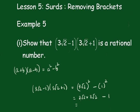Of course this is 3 times 3 is 9 times √2 squared is just 2, minus 1. So the answer is 18 minus 1 is 17, which is a rational number.